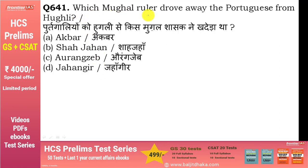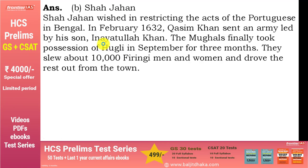Which Mughal ruler drove away the Portuguese from Hooghly? Answer है Shah Jahan। Shah Jahan Portuguese के actions को restrict करना चाहता था। 1632 में उनके general Qasim Khan ने army भेजी जिसे Nayyat Ullah Khan ने lead किया। Mughals ने Hooghly का possession ले लिया, करीब 10,000 Portuguese को मारा और बाकियों को वहाँ से खदेड़ दिया।